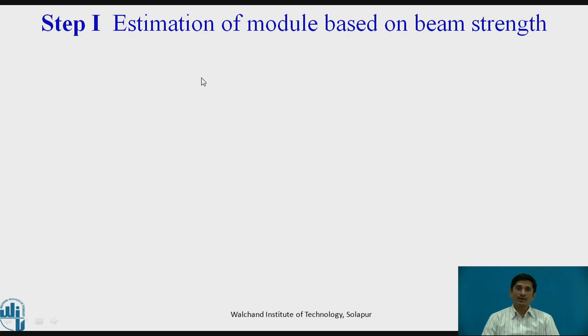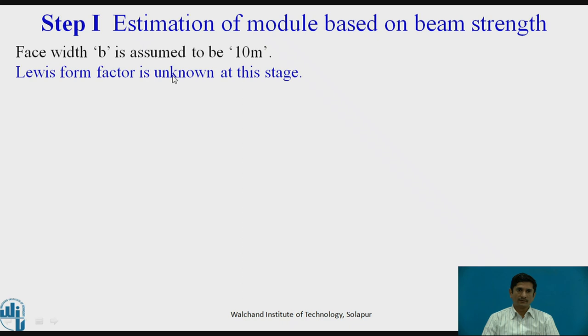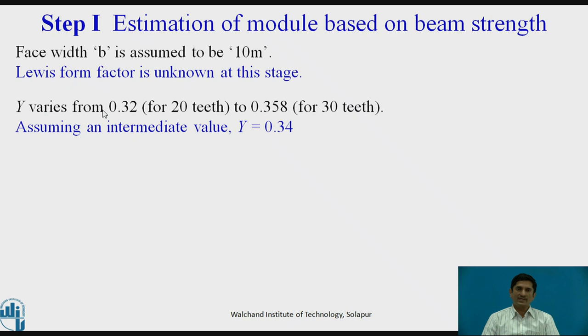We have not estimated the module right now. We are in the process. Face width B is assumed to be 10 times of module as it is not given. Lewis form factor is unknown at this stage. We cannot get the Lewis form factor. Then what to do? Y varies from 0.32 for 20 teeth to 0.358 for 30 teeth. Assuming an intermediate value, Y equals 0.34. See this is the beginning. We need to assume some value. Design the gear. Then we need to verify whether the factor of safety is adequate.